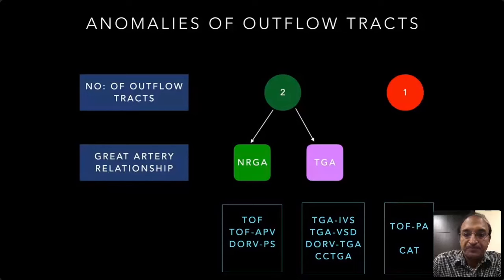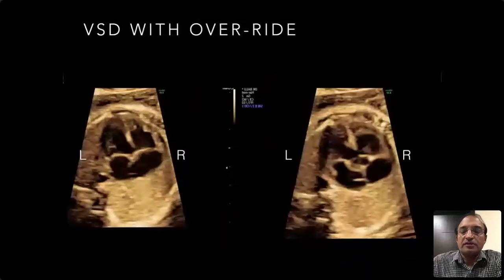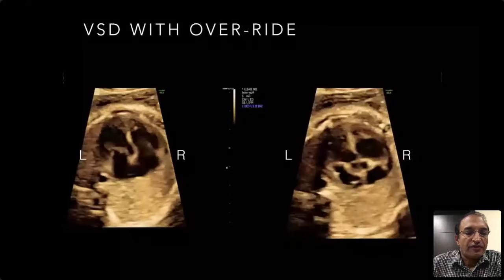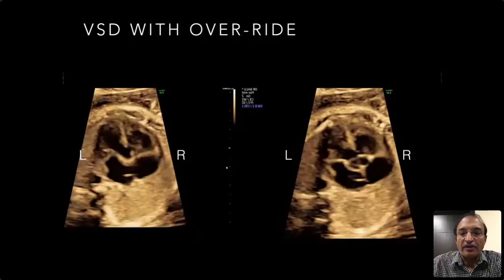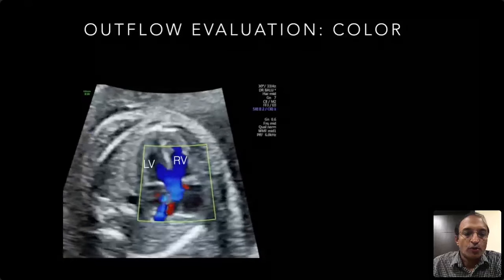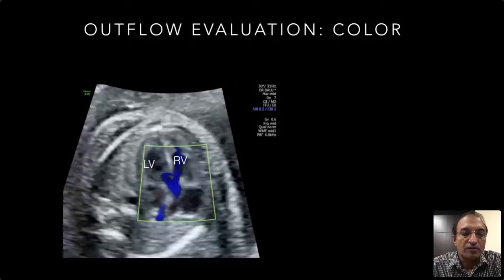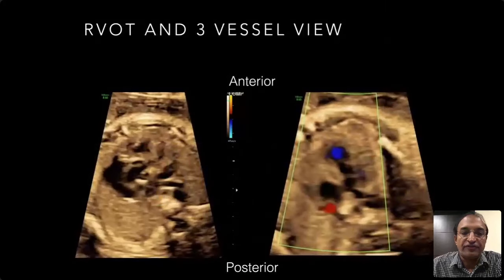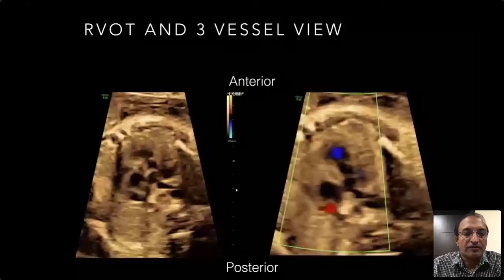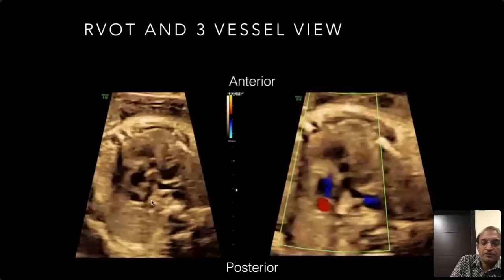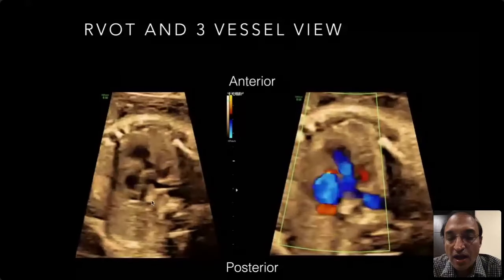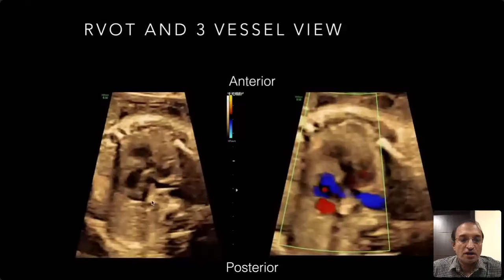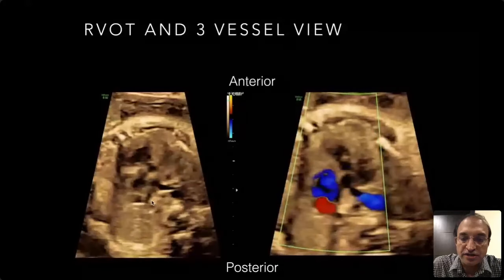Let us look at the first condition. You can see the left and right ventricles marked. As we move towards the outflow, a large ventricular septal defect is seen at the LVOT. With color flow, you see both ventricles ejecting into the same outflow. In the three vessel view, the pulmonary artery is anterior and nicely bifurcating. The PA is smaller than the aorta. So: balanced ventricles, large VSD, overriding aorta, and a small pulmonary artery — hence tetralogy of Fallot.